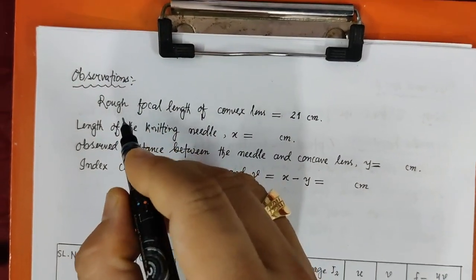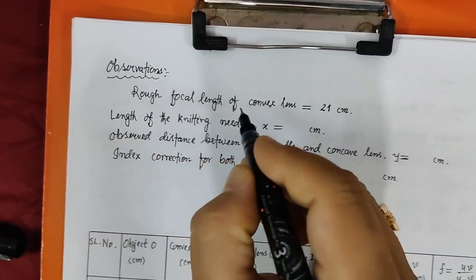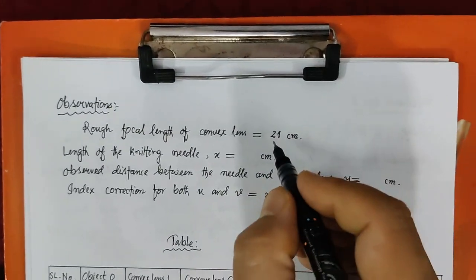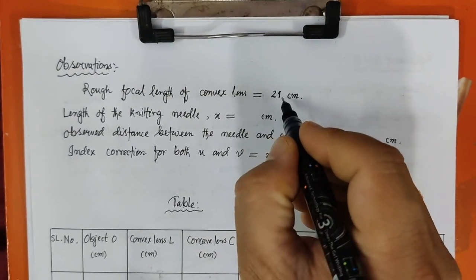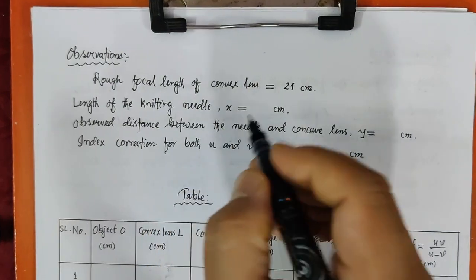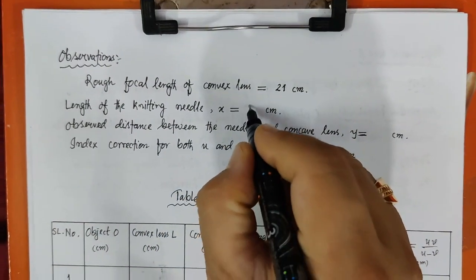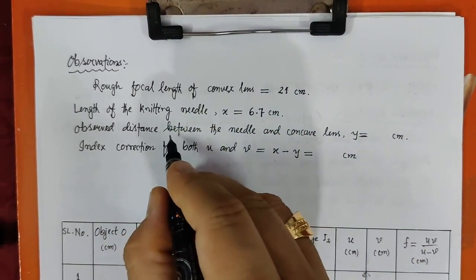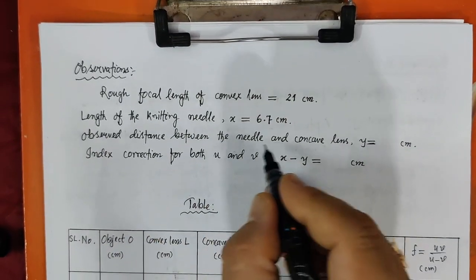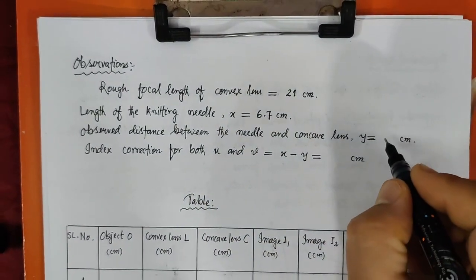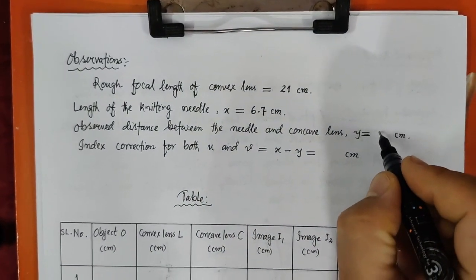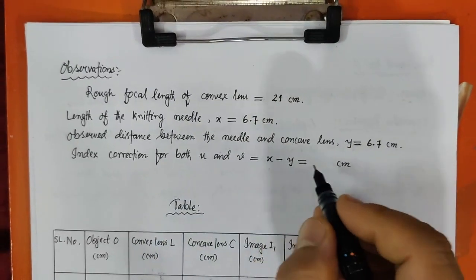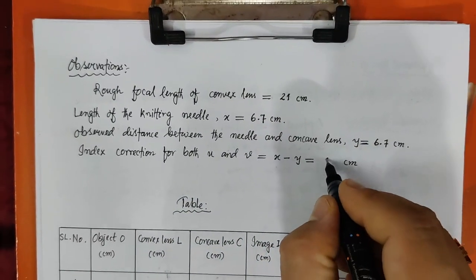Now let's take the observations. First, we find out the rough focal length of the convex lens, as already found in the previous experiment — that is 21 cm. The length of the knitting needle is 6.7 cm. The observed distance between the needle and the concave lens is also 6.7 cm. The index correction for U and V is 0 cm.